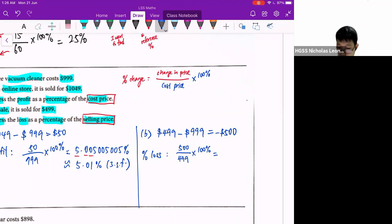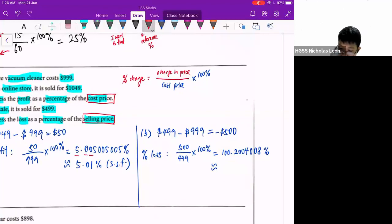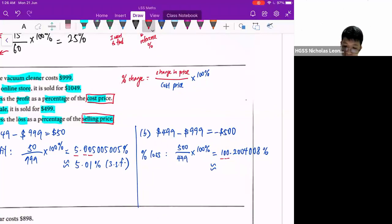It will give me 100.200408%. When I round it off to three significant figures, one, two, three, will be 100%. Why? Because the fourth significant figure is a two, so I round down. And this is how I calculate my answers. So if you have questions, please text me. Thank you.